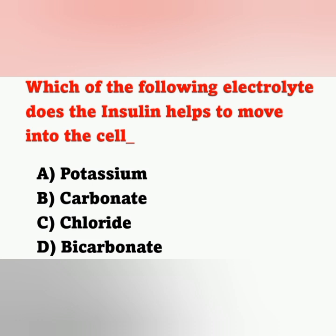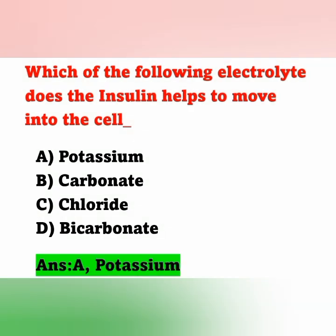Question 11: Which electrolyte does insulin help move into the cell? Options: A) potassium, B) carbonate, C) chloride, D) bicarbonate. As discussed, insulin causes movement of potassium from extracellular fluid to intracellular fluid. The correct answer is option A — potassium.